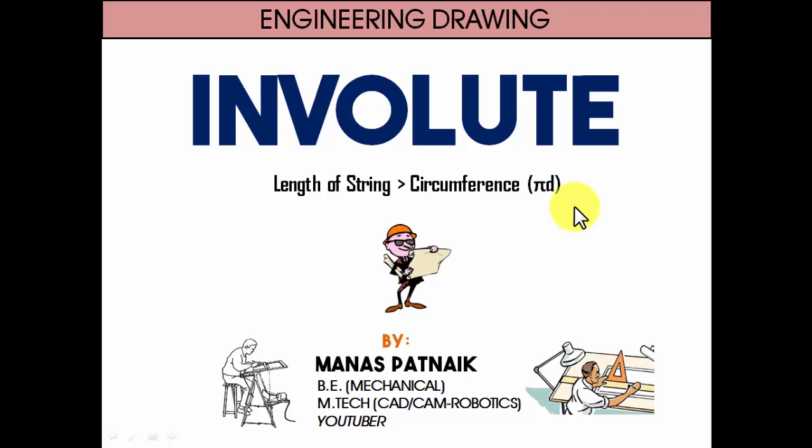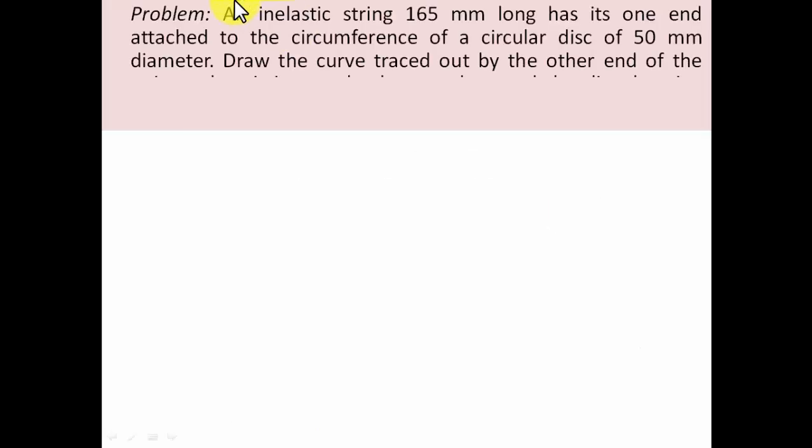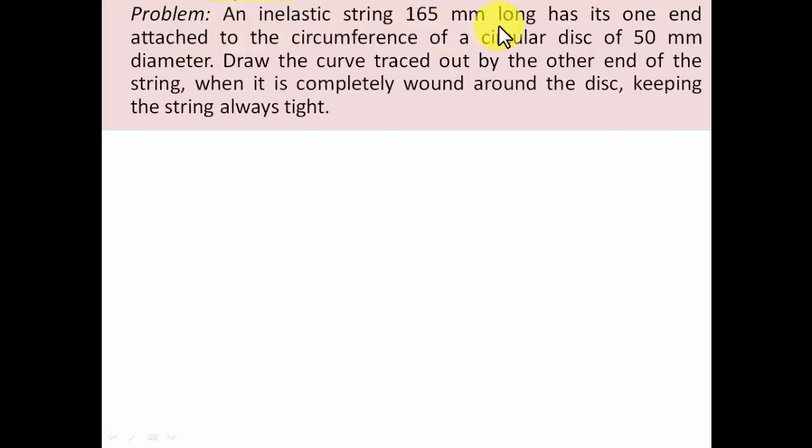Let's see what the problem has in store. An inelastic string 165 mm long has one end attached to the circumference of a circular disc of 50 mm diameter. Draw the curve traced out by the other end of the string when it is completely wound around the disc, keeping the string always tight.